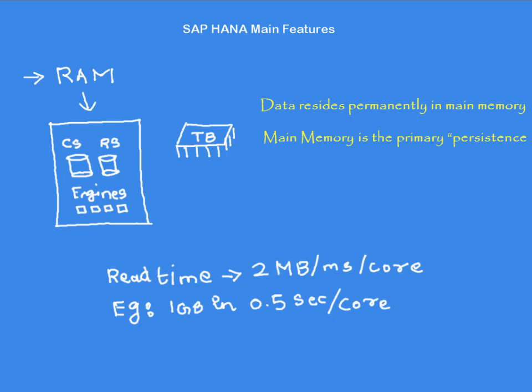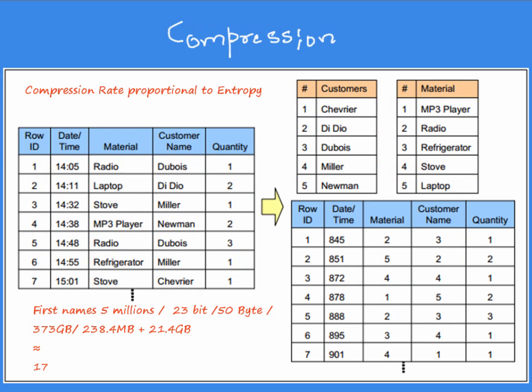If you have to scan through 100 GB, that would take 50 seconds per core. So if you have 50 cores, that takes about 1 second. That's the kind of math behind the read times of RAM and why it's fast if you use RAM instead of a hard drive.